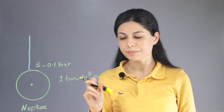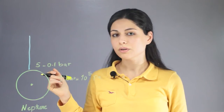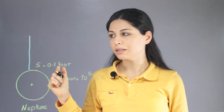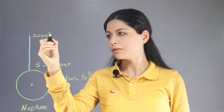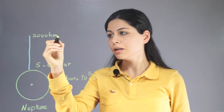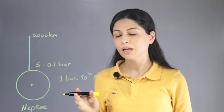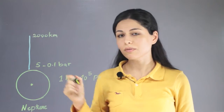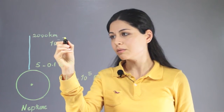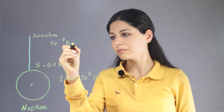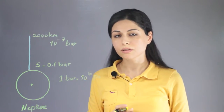In high altitudes — for example, at altitudes of 2000 kilometers from the surface of the planet — the pressure decreases significantly and reaches small values of 10 to the minus 7 bar.